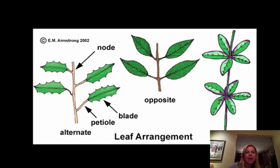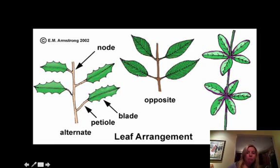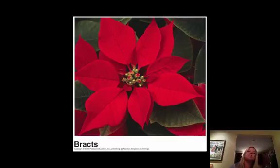Leaves can also have different setups on how they come off of the branch. You can have alternate, where you have one leaf coming off each side alternating. You can have opposite, where you have two leaves coming off per node. And then you can have whorled, which is where they're kind of in a little circle coming off of the branch. Don't confuse that with types of compound leaves — you could have compound leaves coming off in an opposite or alternate arrangement. The last thing we're going to talk about are adaptations that leaves can have, such as floral leaves or bracts, like this poinsettia.